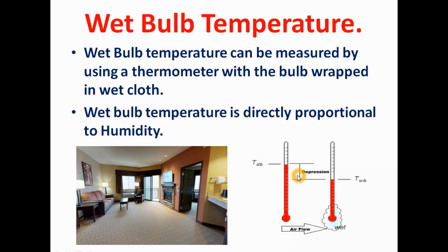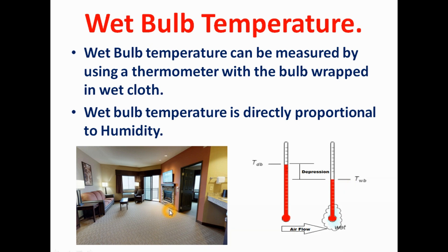This difference between dry bulb temperature and wet bulb temperature is called depression. Suppose we measure the dry bulb temperature of a room and it is 32 degrees Celsius. If we then measure the wet bulb temperature using the same thermometer with the bulb wrapped in wet cloth, the temperature will be less than the dry bulb temperature — this difference is called depression. This depression depends on the humidity of the area: if humidity is more, the temperature difference is less; if humidity is less, the temperature difference is more.